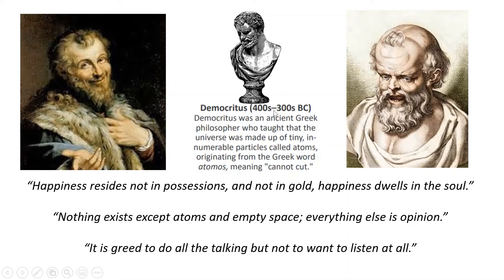Democritus was in the 400s to 300s BC. He was an ancient Greek philosopher who taught that the universe was made up of tiny, innumerable particles called atoms, originating from the Greek word 'atomos,' meaning 'cannot cut.' He was also called the laughing philosopher and was one of the two founders of ancient atomist theory. He taught that everything is made up of atoms and that they move about in an infinite void. Some of his quotes: 'Happiness resides not in possessions and not in gold; happiness dwells in the soul.' 'Nothing exists except atoms and empty space; everything else is opinion.' 'It is greed to do all the talking but not to want to listen at all.'